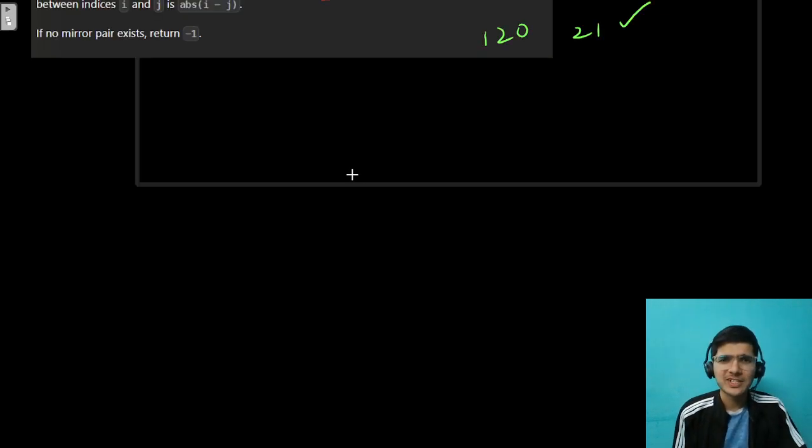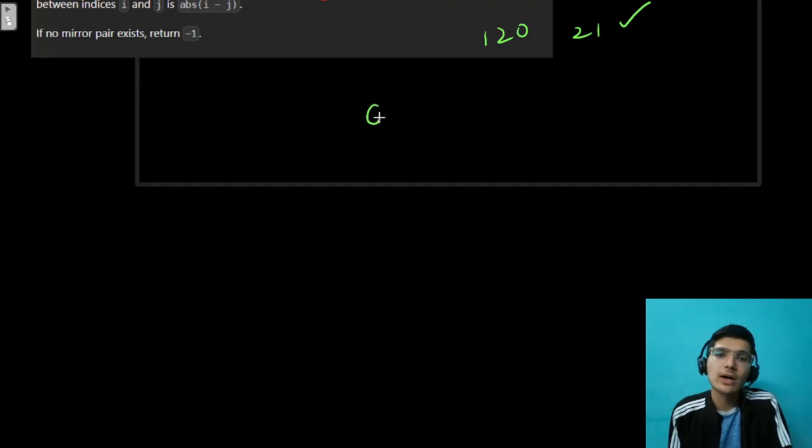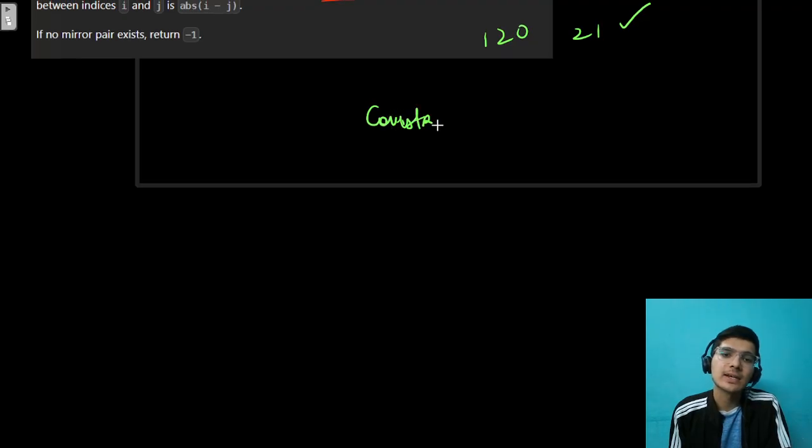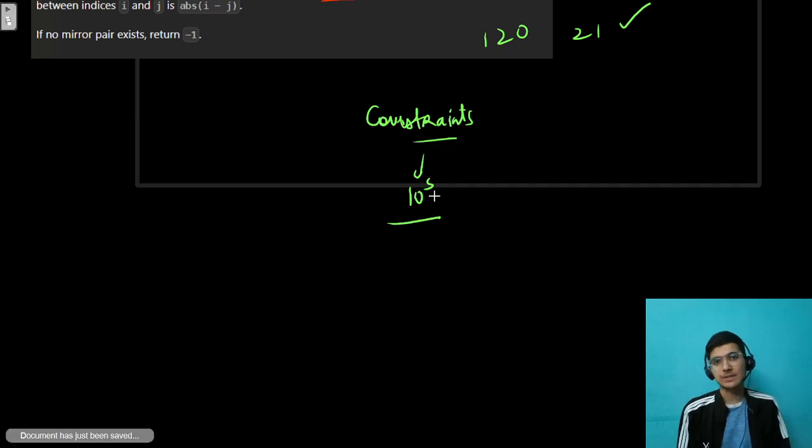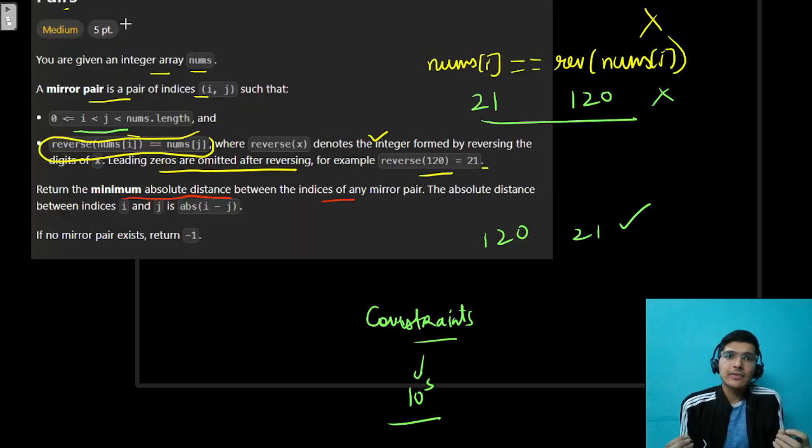What you have to do? We have to minimize the distance between the pairs. If you have solved today's POTD, not exactly the same problem, but a similar kind of approach we will use it. Because here, there also we have to minimize the subarray removal. Here also we have to somehow minimize the distance. How we can do that? Let's try to think about it.